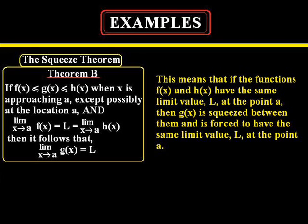Now the yellow text to the right explains this a little better hopefully. This means that if the functions f of x and h of x have the same limit value L at the point a, then g of x is squeezed between them and is forced to have the same limit value L at that point a. So now we're going to do an example and show you how to work this out.